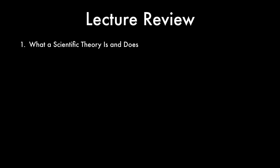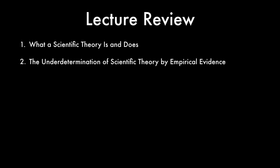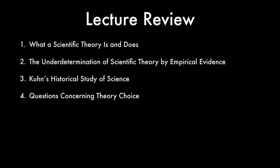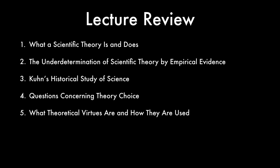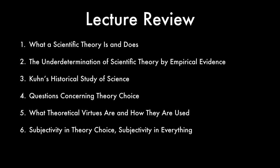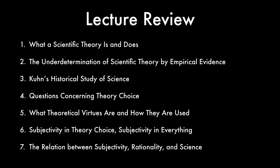In this lecture, we've looked at seven topics. One: what a scientific theory is and does. Two: the underdetermination of scientific theory by empirical evidence. Three: Kuhn's historical study of science. Four: questions concerning theory choice. Five: what theoretical virtues are and how they're used. Six: subjectivity in theory choice, subjectivity in everything. And seven: the relation between subjectivity, rationality, and science.